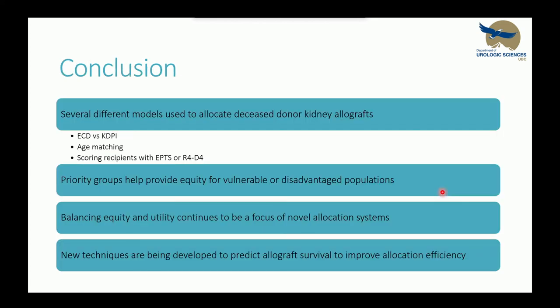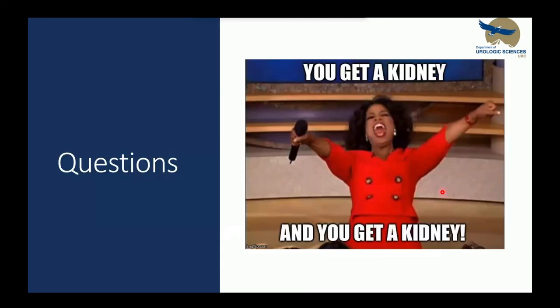In conclusion, we've discussed several different models for deceased donor kidney allograft allocation. We compared ECD categorization versus KDPI, age matching to optimize allograft survival, scoring recipients with EPTS or R4D4, priority groups for vulnerable and disadvantaged populations like pediatrics and highly sensitized patients, balancing equity and utility, and new techniques to predict allograft survival. Overall, as long as kidneys remain a scarce resource and people are dying waiting for a transplant, there will always be a need to continue iterating and improving allocation systems — making the most of the lifeboats we've got. Thank you.